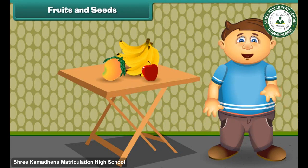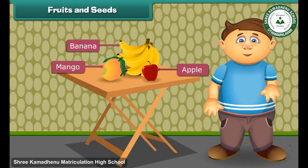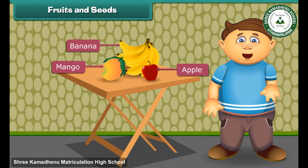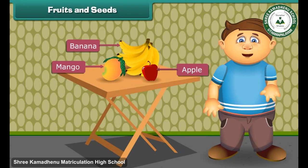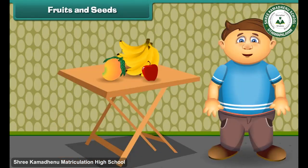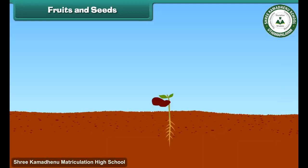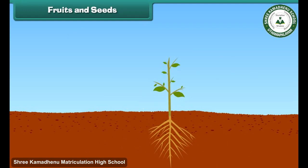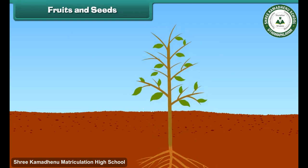Most of you like fruits. Fruit is the juicy part of the plant and it forms from the flowers of the plant. Fruits are of different shapes, sizes and colours, and are good for health as they contain many vitamins. Seeds are present inside the fruits — some fruits like mango have only one seed, while others like apple and watermelon have many seeds. A new plant grows from a seed, and the seed also stores food for the baby plant. When the seed gets water, air and suitable temperature, it starts growing and soon becomes a new plant.